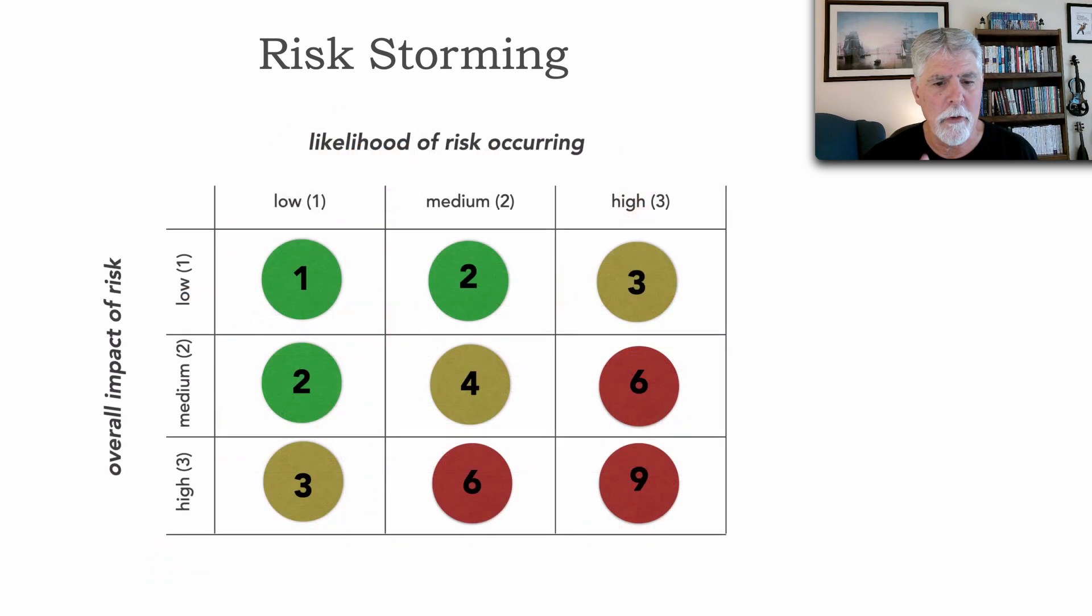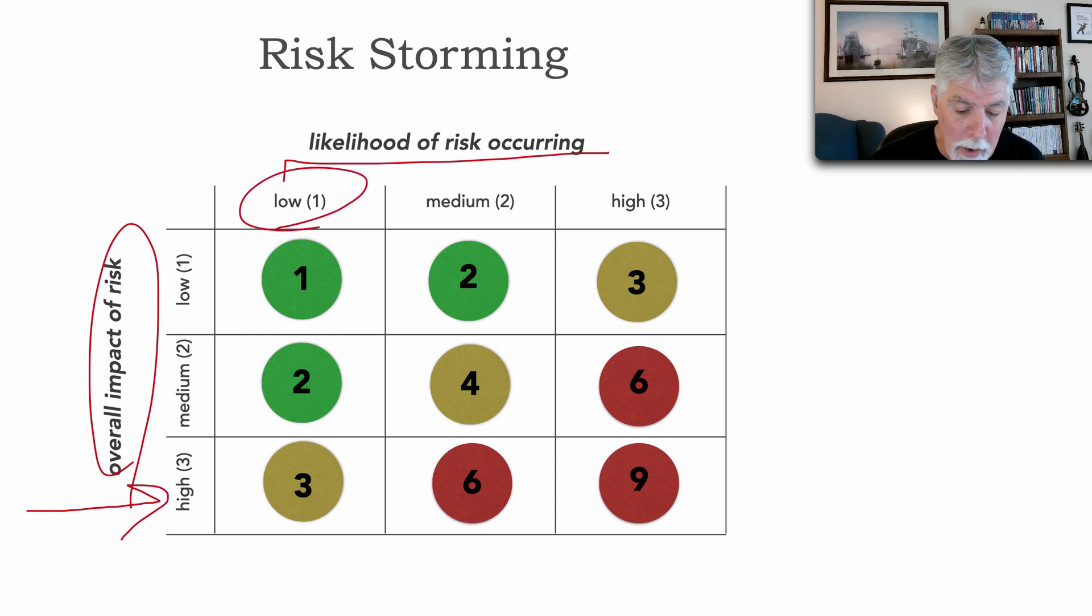Well, says the other two team members, we do agree that the overall impact of the risk is definitely high. But let us show you some metrics, because we gathered some information, historical information, and we can demonstrate that those elastic load balancers have, as far as we have tracking, never gone down. So that means the likelihood of that risk occurring is low. That's why we put it at a medium, number three.